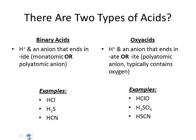Some examples of oxy acids: we have HClO, H2SO4, and then with the thiocyanate ion we get HSCN. We'll look at how to name these in a little bit.